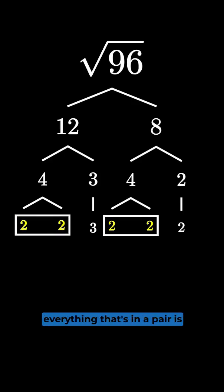Essentially, everything that's in a pair is going to go on the outside of the radical, and then anything that's not in the pair is going to go on the inside. Since we have two pairs of 2, we'll put 2 times 2 on the outside, and then we'll have 3 times 2 on the inside.